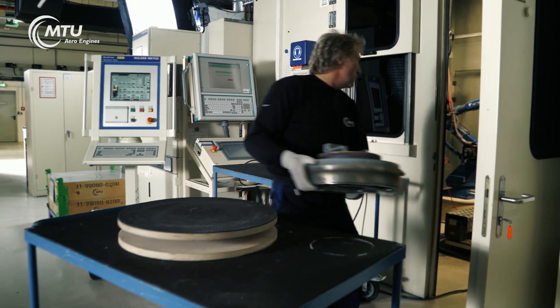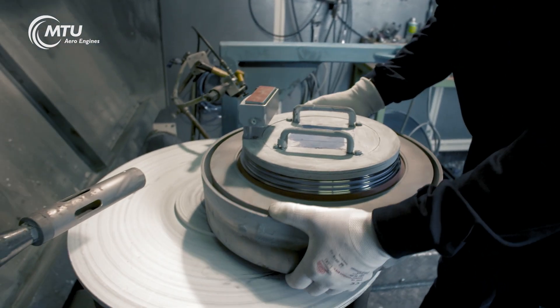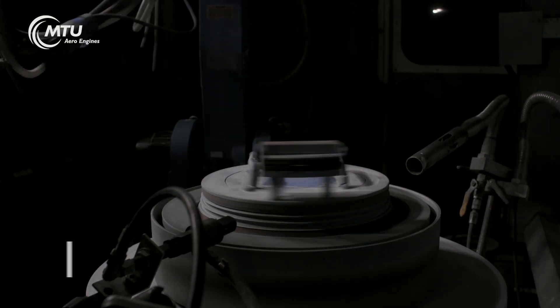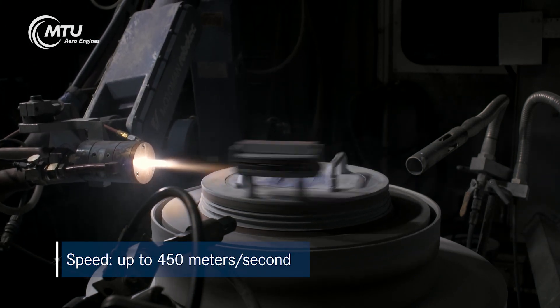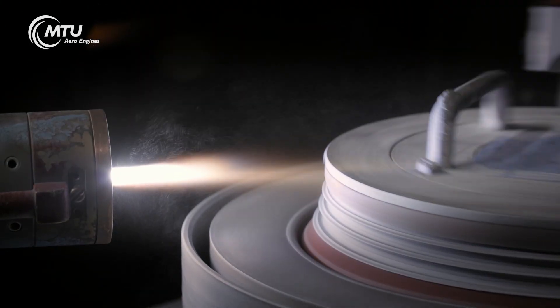In this surface coating method, powder particles are injected into hot plasma and thereby melted and hit the surface of the component at speeds of up to 450 meters per second.